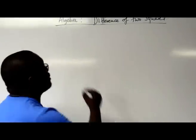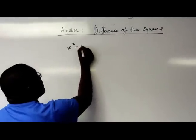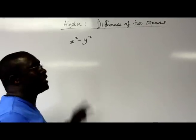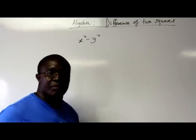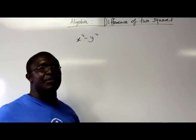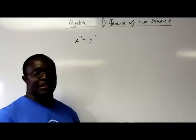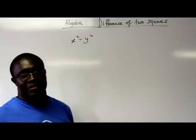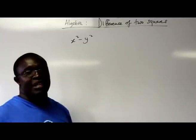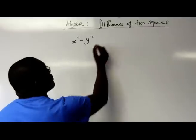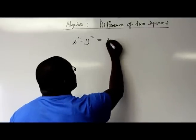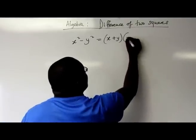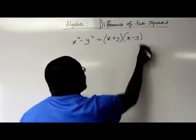So basically, difference of two squares states that x squared minus y squared — please take note, I'm just using x and y; it could be m and n or p and q or anything — these are just replacements for unknown values. So x squared minus y squared would be x plus y multiplied by x minus y.